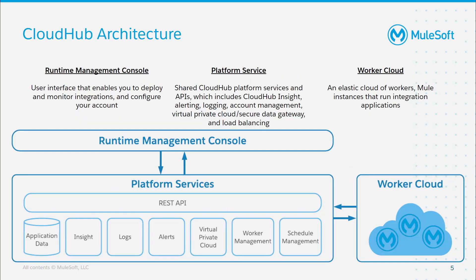Next, it is important to level set on what specifically we are referring to when discussing CloudHub high availability and disaster recovery. MuleSoft's CloudHub architecture actually refers to three different components: the Runtime Management Console, the Platform Services, and the Worker Cloud. The first two components are often referred to as the Management Plane, where you go to manage your running applications. The majority of what we will discuss is in reference to the Worker Cloud, often referred to as the Runtime Plane, where your applications actually reside.